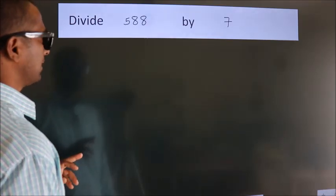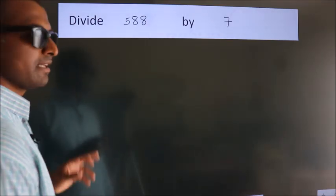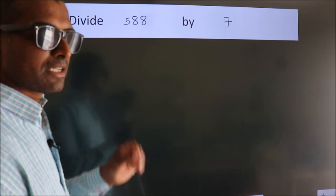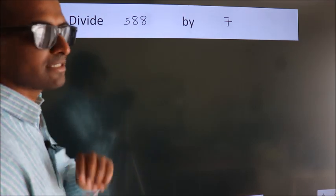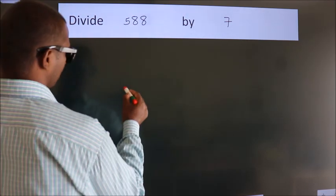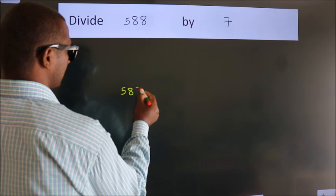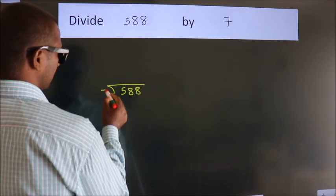Divide 588 by 7. To do this division, we should frame it in this way: 588 here, 7 here.